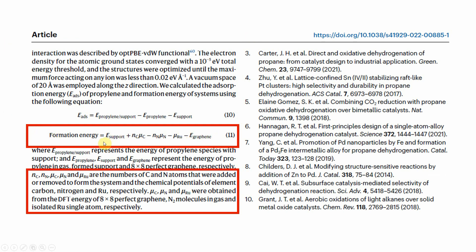This is the formula they use to calculate the formation energy. E_support means the single atom catalyst total energy. nc·mu_c means the number of carbon atoms added or removed, and mu_c is the chemical potential — the total energy of the corresponding carbon atom. Similarly, nn·mu_n is the number of nitrogen atoms and their chemical potential. mu_Ru is the chemical potential of the single ruthenium atom in a cubic unit cell. E_graphene is the total energy of pure graphene without doping.